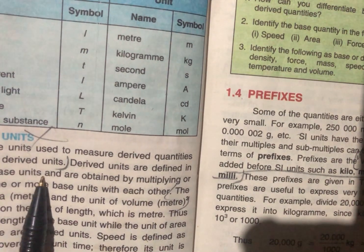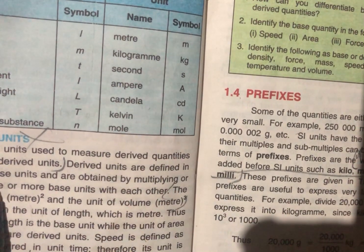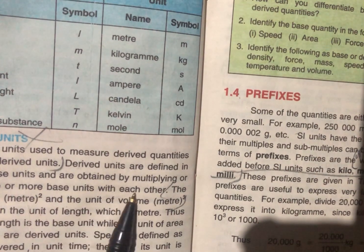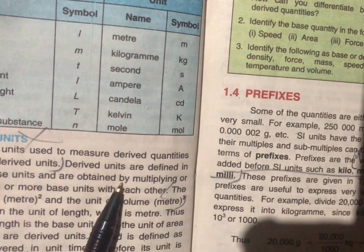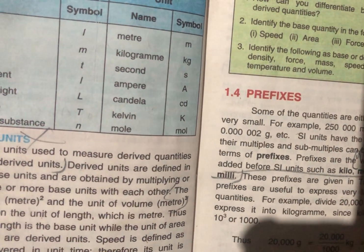Base units are defined by multiplying or dividing one or more base units with each other. We have to multiply or divide one or more base units with each other.